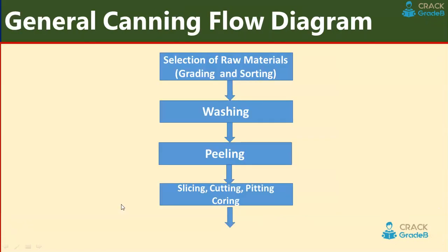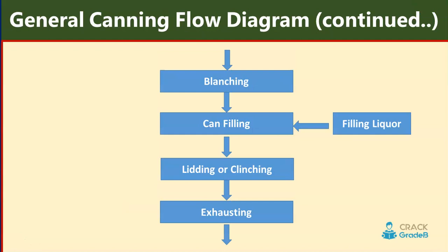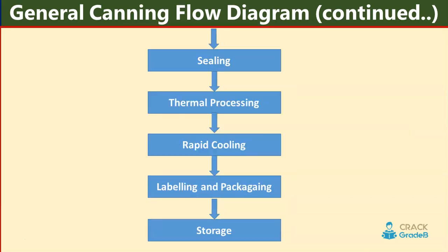General canning flow diagram: selection of raw materials, grading and sorting, washing, peeling, slicing, cutting, pitting, curing, blanching, can filling, lidding or clenching, exhausting, sealing, thermal processing, rapid cooling, labeling and packaging, storage.